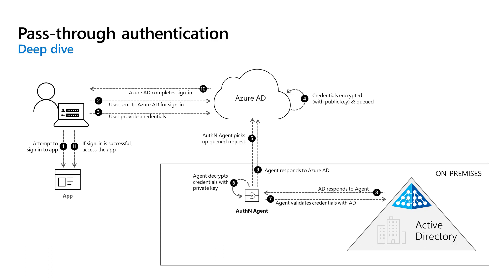Now that they've signed in, Azure Active Directory, on receiving that request, places the username and password — encrypted using the public key of the authentication agents — into a queue. An on-premises authentication agent retrieves the username and encrypted password from the queue. The agent doesn't frequently poll for requests but retrieves them over a pre-established persistent connection. The agent then decrypts the password using its private key, and validates the username and password against Active Directory using standard Windows APIs — a similar mechanism to what Active Directory Federation Services (ADFS) uses.